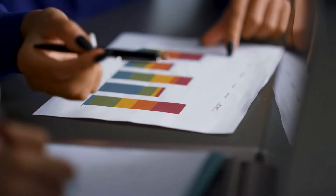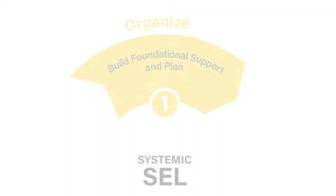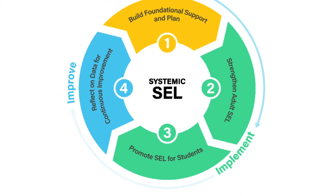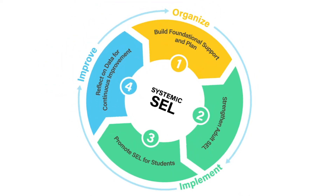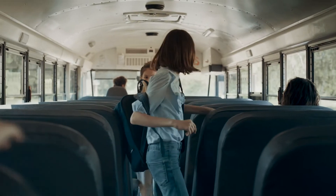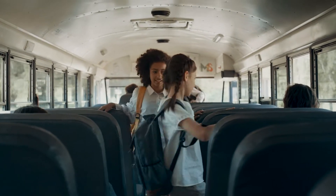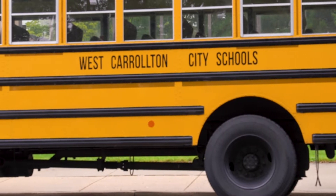There are a variety of continuous improvement models. We think of continuous improvement using three basic phases: organizing, implementing, and then improving. This is cyclical, so we do this over and over again. These stages of the improvement cycle are practiced in many school districts across the country, including in the West Carrollton School District south of Dayton, Ohio.